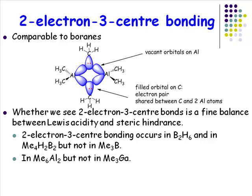If there is a hydride ligand present, that will also bridge preferentially. But hydride ligands don't have lone pairs of electrons, so never draw it as though you've got a dative bond from hydrogen to another element — there is no lone pair to datively donate. Hydride ligands are preferred over bridging alkyl ligands, and that can be understood from a steric point of view: it is much easier to get a hydride between two metals than a bulky alkyl group.